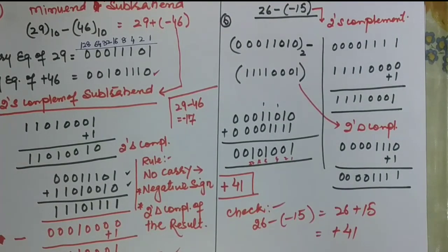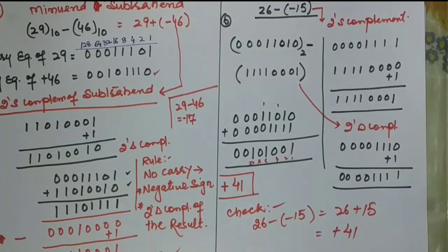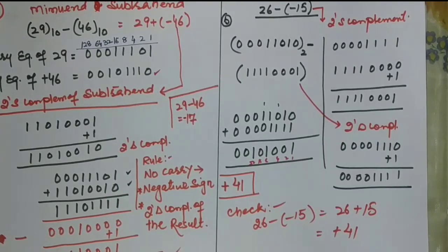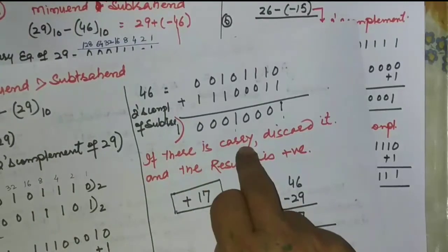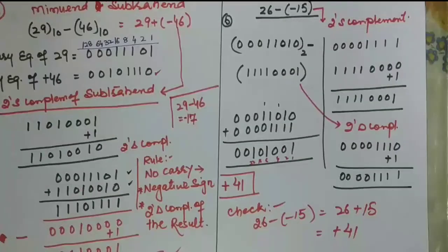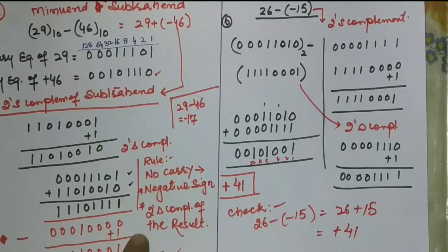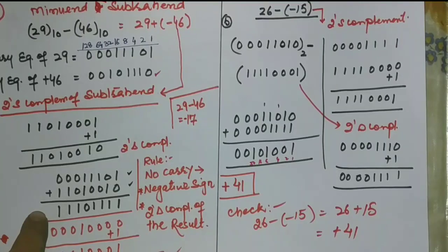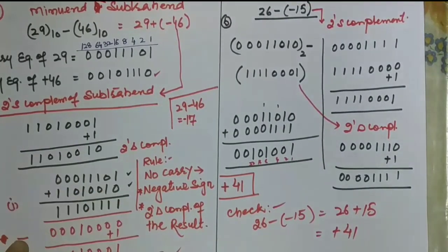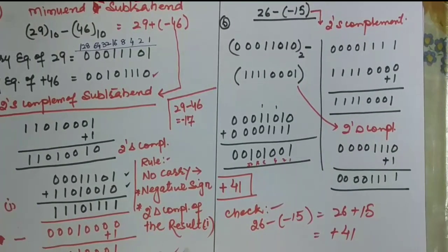The key thing to remember is: whatever the negative number, get the two's complement of the subtrahend and add it to the minuend. If there is a carry, discard it and the result is positive. If there is no carry, put a negative sign and take the two's complement of the result obtained in the first step to get the final answer. Thanks for watching.